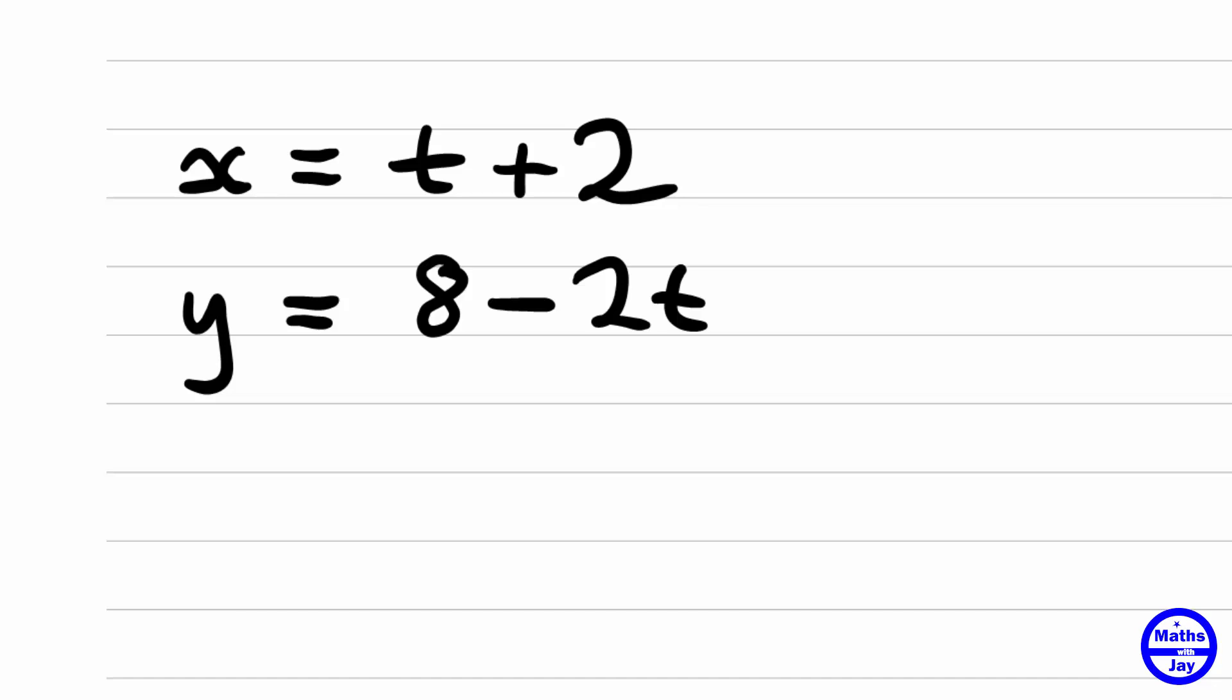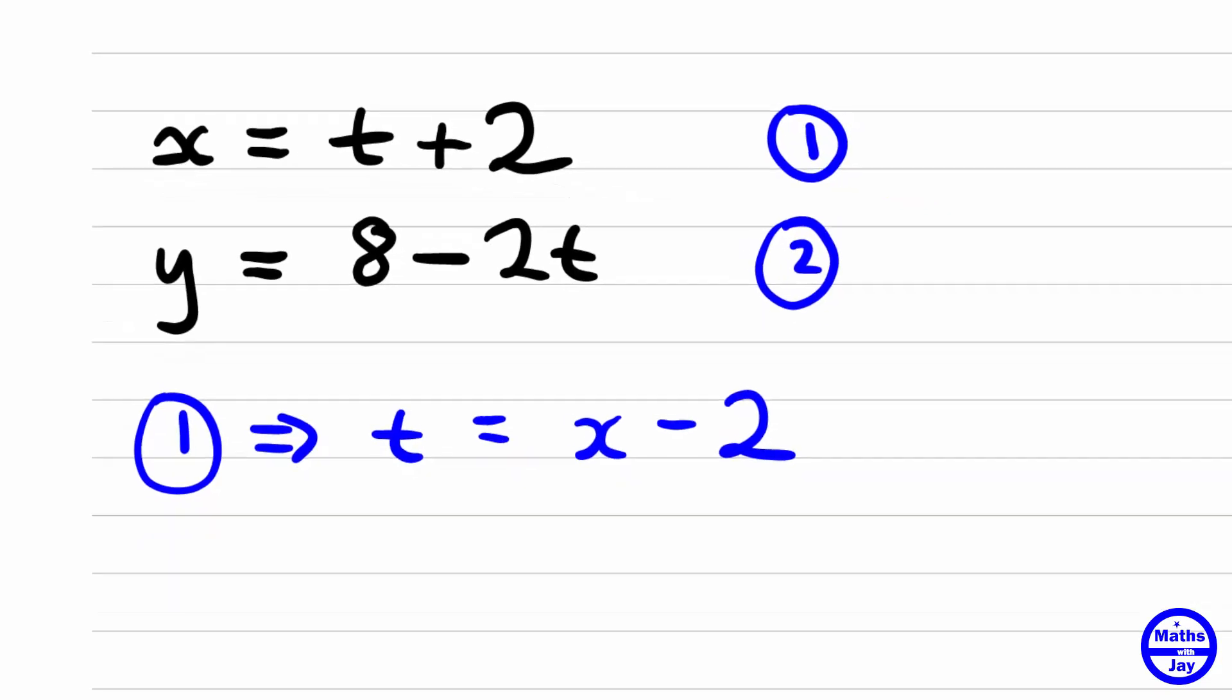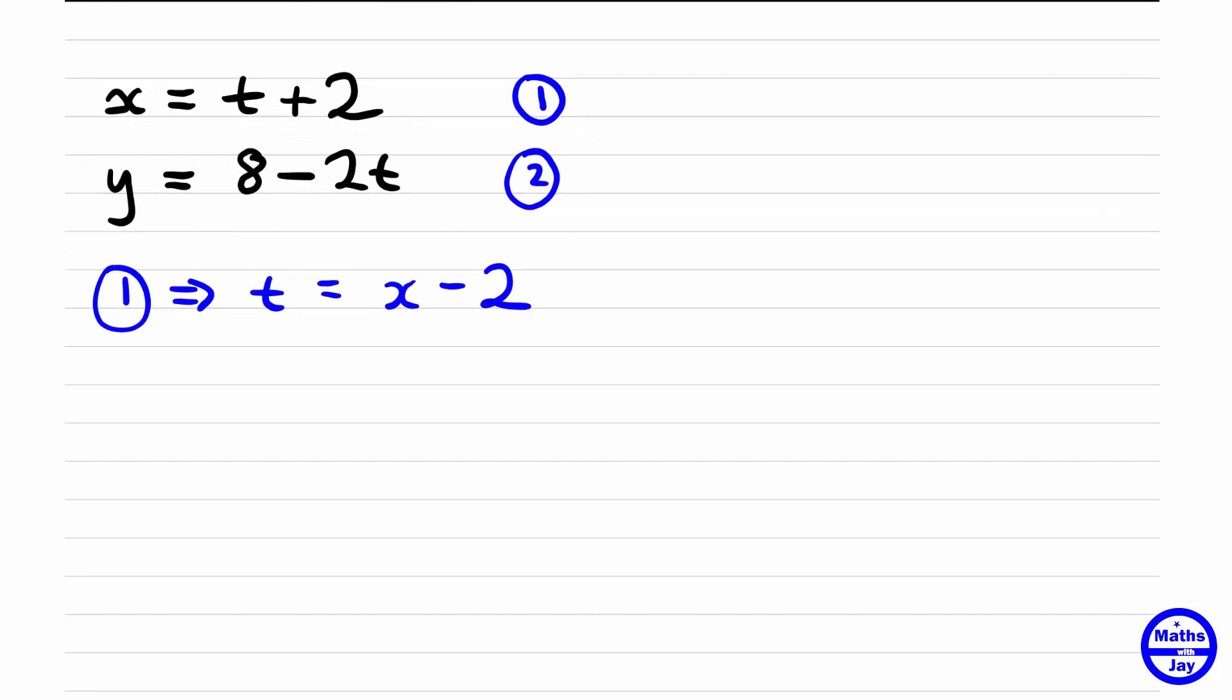Let's start by numbering the equations 1 and 2. What we're going to do is use the first one to make t the subject, and then we're going to substitute that into the second equation.